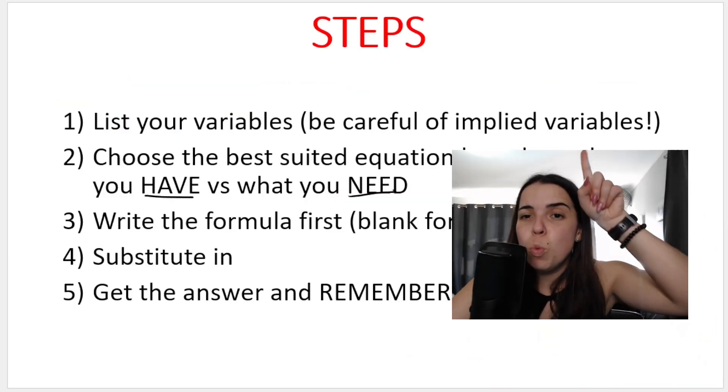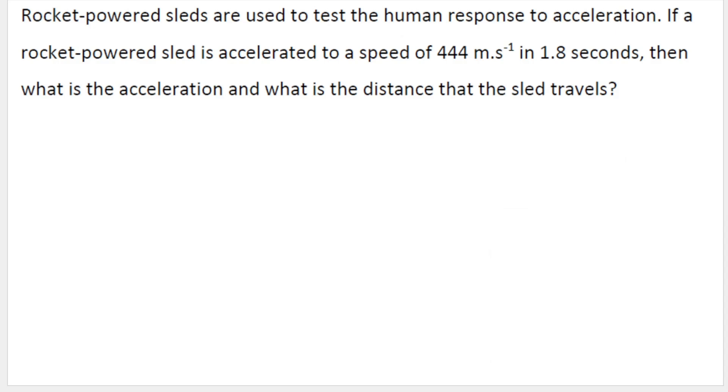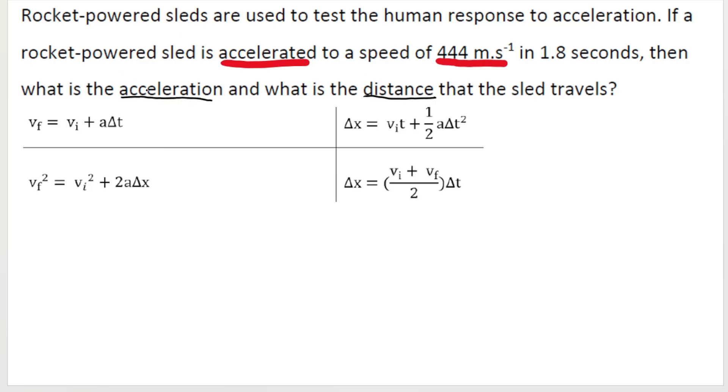Now what did I mean in number one where I said be careful of implied variables? In my second example, I have rocket-powered sleds are used to test the human response to acceleration. If a rocket-powered sled is accelerated to a speed of 444 meters per second in 1.8 seconds, then what is the acceleration, and what is the distance that the sled travels? I want you to pause the screen and see if you can try this first. Here are the formulas that you can choose from. Okay, so there's essentially two parts to this question. They're first asking me, what is the acceleration, and then what is the distance?